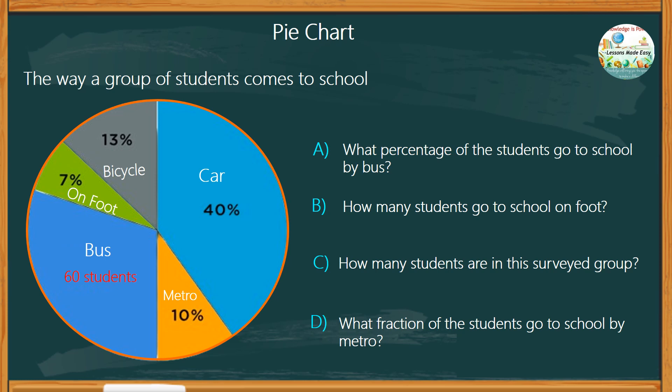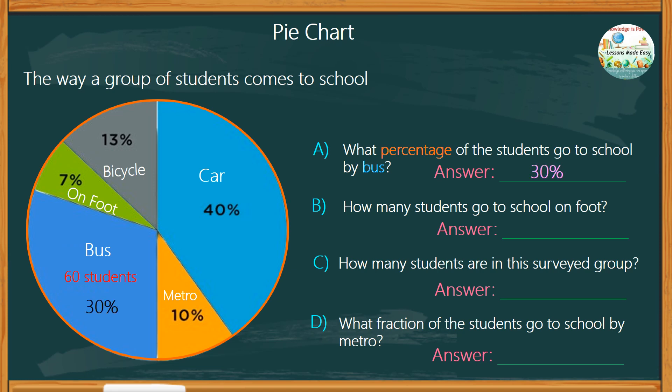You can always pause this video and take as much time as you need. If you're ready, let's go ahead and check your answers. For the first question, we need to find the percentage of students who go to school by bus, which is pretty easy. All we have to do is add the percentages of all the other ways students go to school. Altogether, we have a total of 70%. So if one whole circle makes up 100%, therefore 30% of the students go to school by bus.